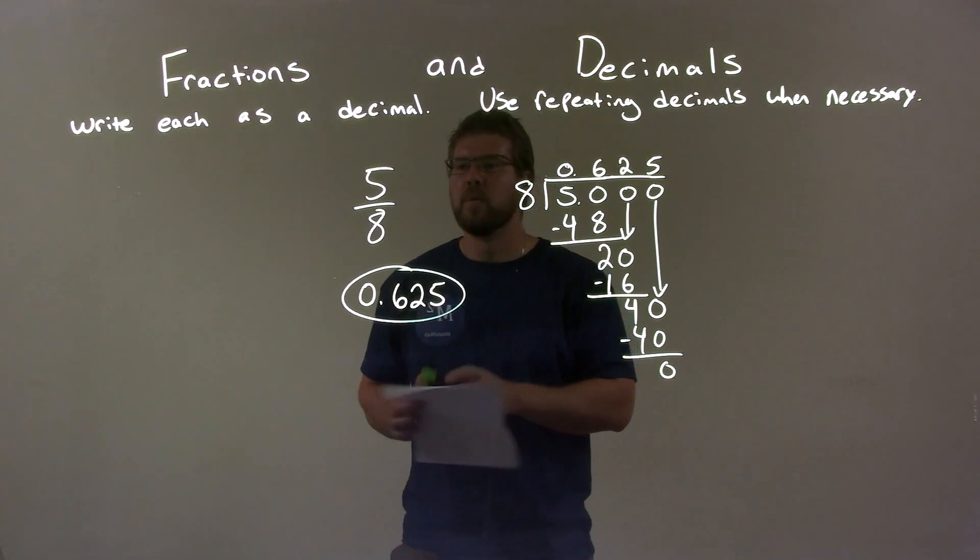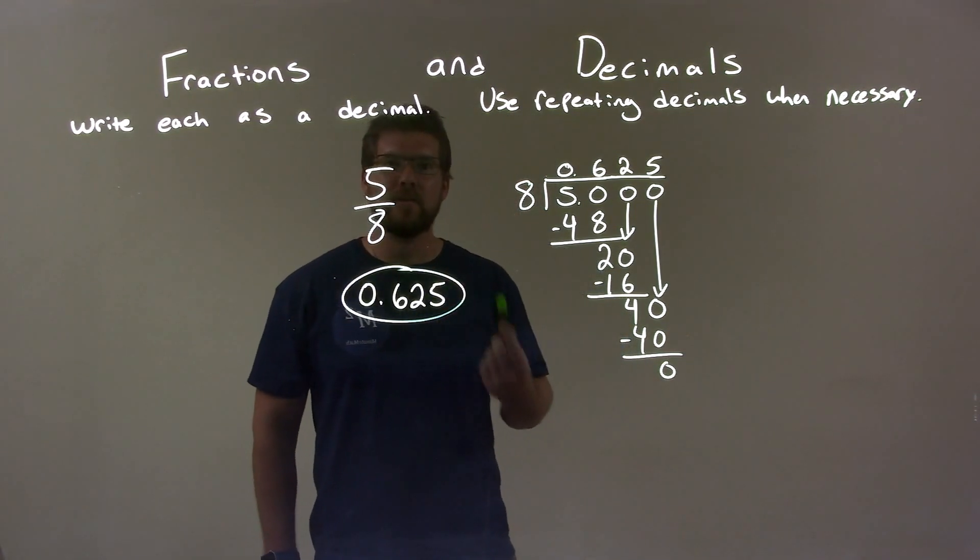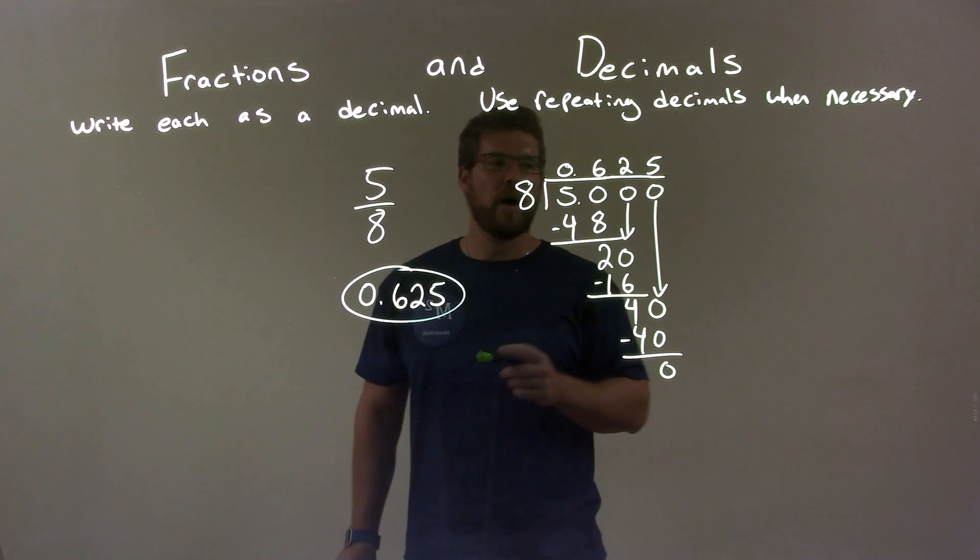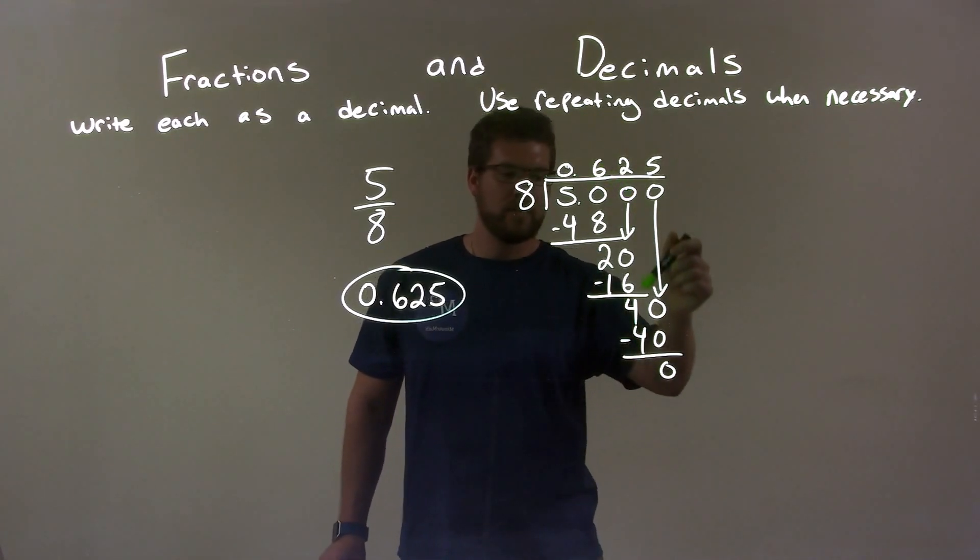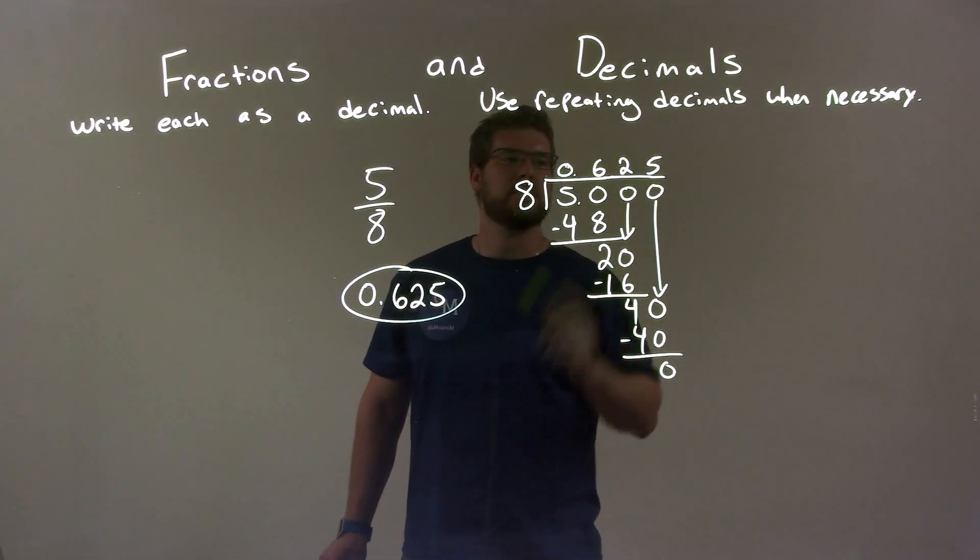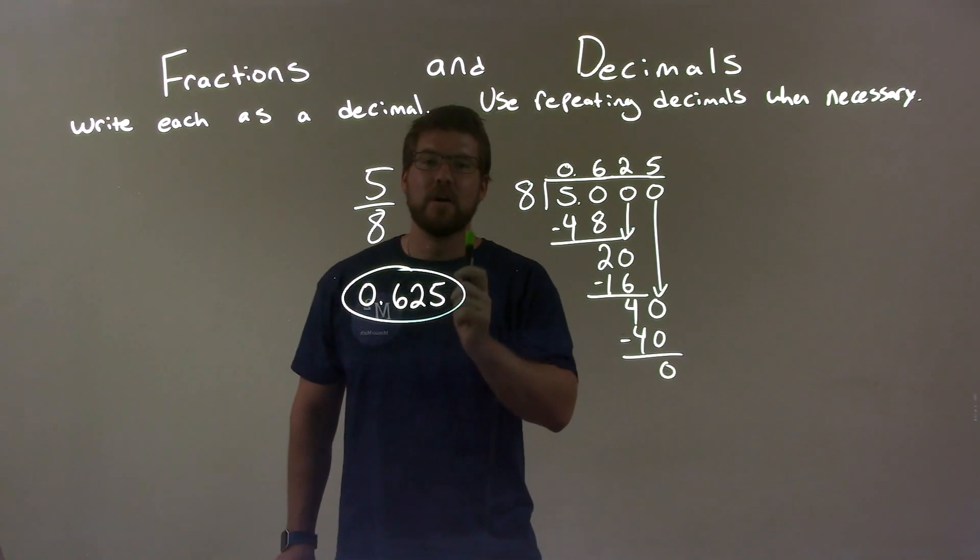So, quick recap. We were given five eighths and we had to write that as a decimal. We did long division, eight into five, and throughout that process we ended up with 0.625, which is our final answer.